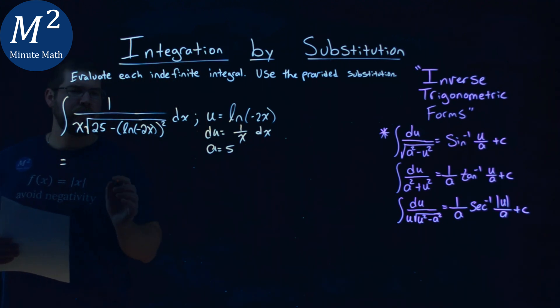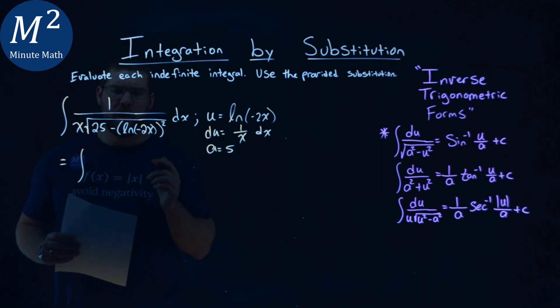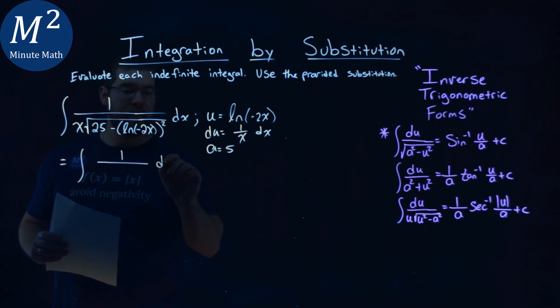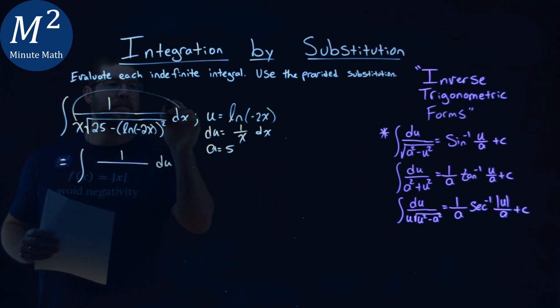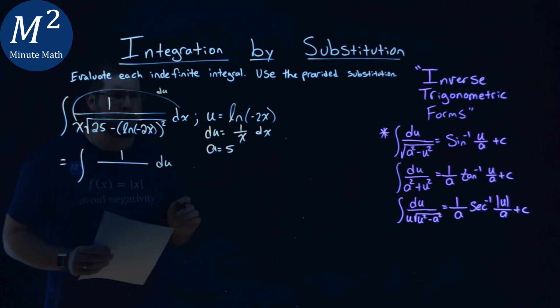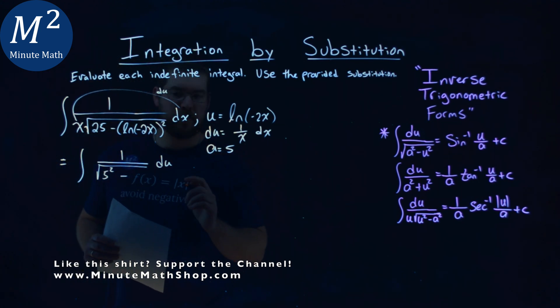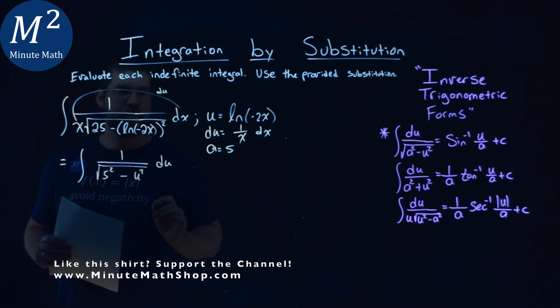So, continuing through, we have the integral here, let's write it in terms of u. Now, we have 1 over, now, the 1 over x dx is replaced by that du right here, okay? So, these two parts, that's my du, okay? And then we have the square root of a value, which is 5 squared, so I'm going to write it as 5 squared, minus my u value, natural log of negative 2x, u squared, okay? All right, u squared, and we have it.